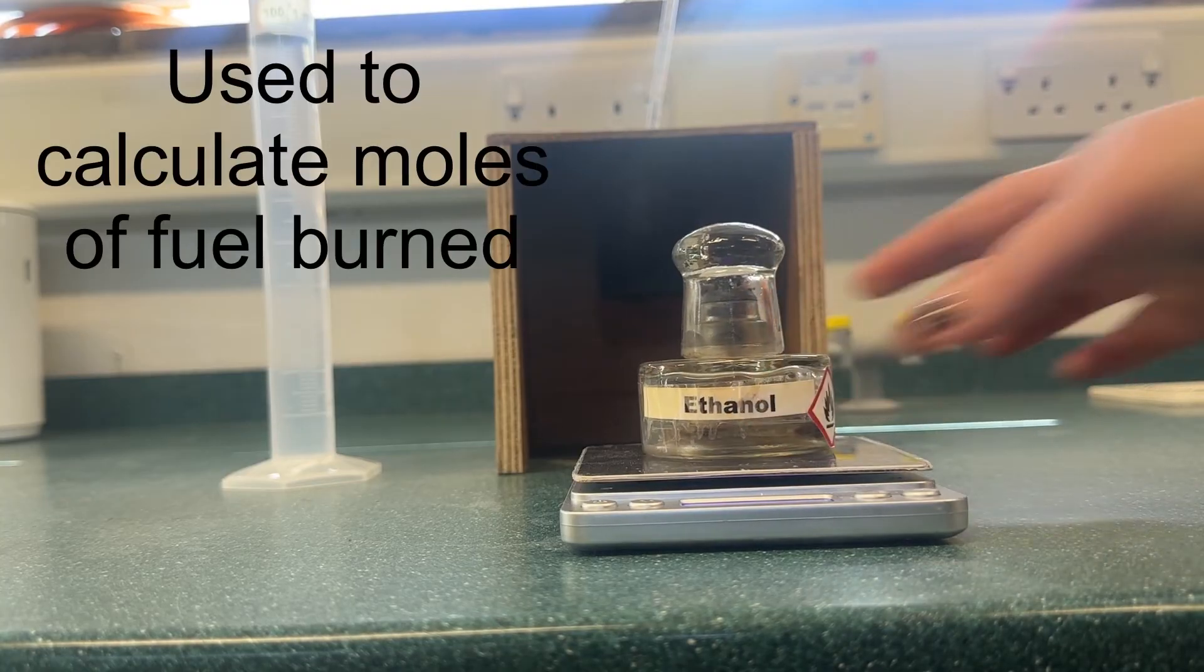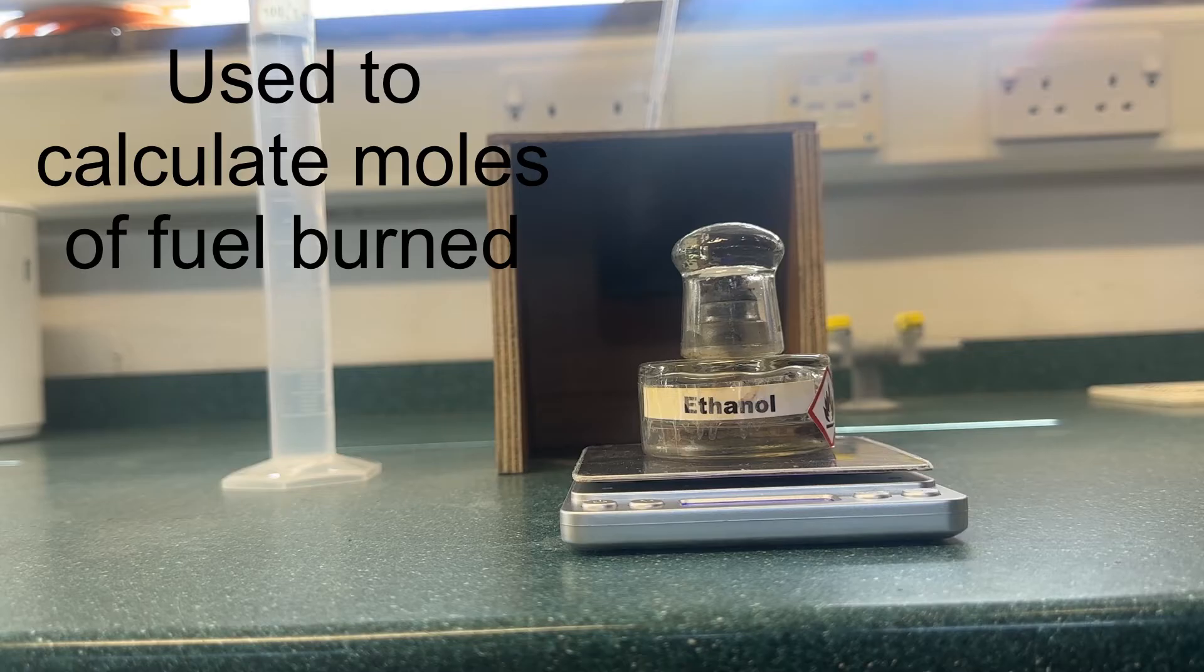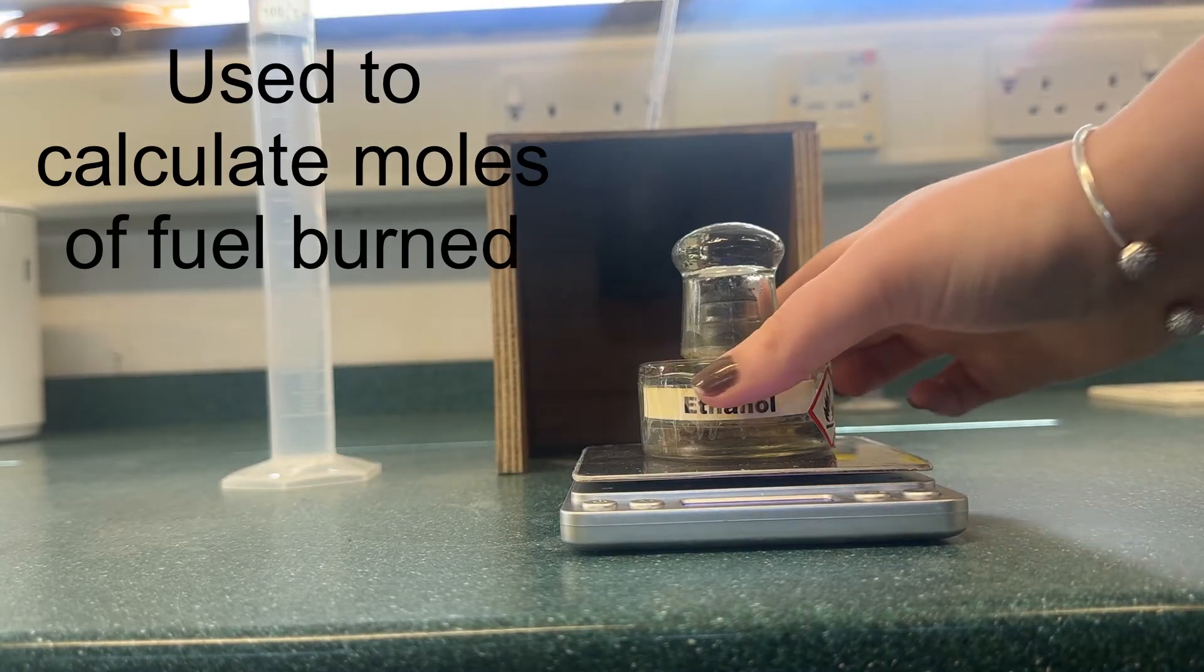The first measurement you need to take is the mass of the spirit burner at the start of the experiment. You need to do this with the lid on so that you do not evaporate any of the alcohol.